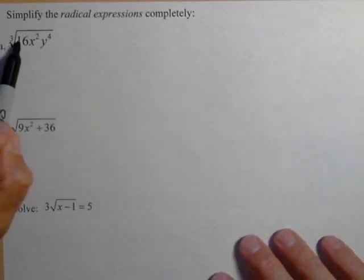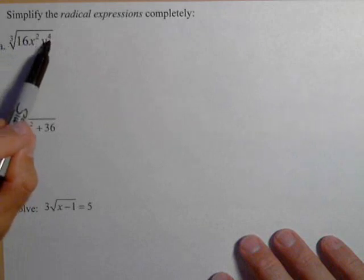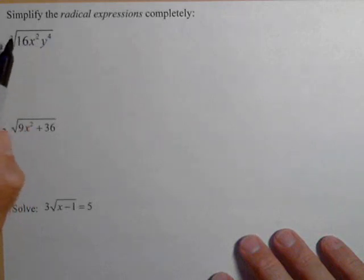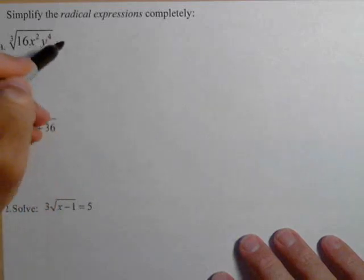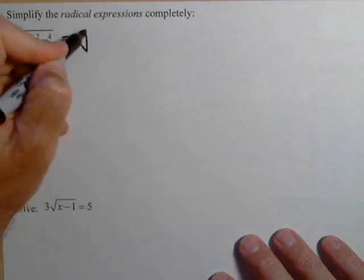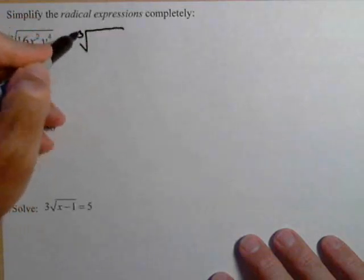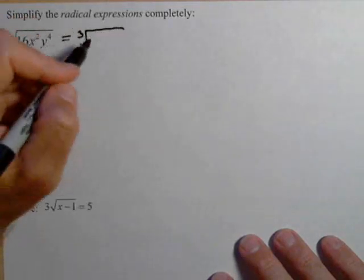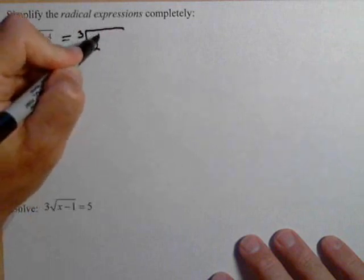We have the cube root of 16x² y to the fourth. So what we're going to look for are any perfect cubes that can be factored out. So let's rewrite these as powers. The cube root 16 can be written as 2 to the fourth.